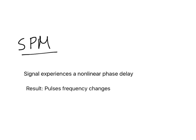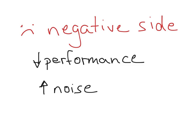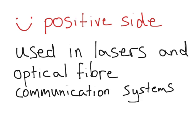So is self phase modulation good or bad? On the one hand, the performance of the signal decreases and the noise increases. However, it is used in optical signals where the pulses of light are short and intense, such as lasers and optical fibre communication systems.